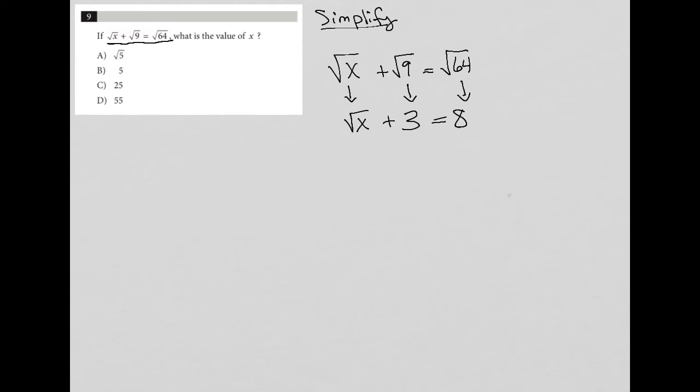So if I were to simplify this further, I could subtract 3 from both sides, and I'd have the square root of x is equal to 5.